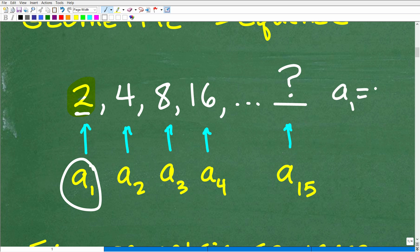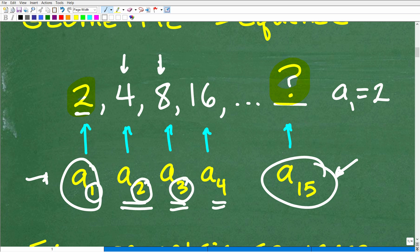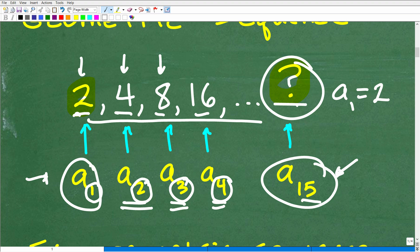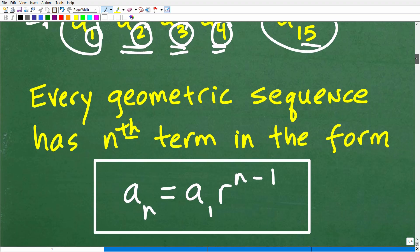The second term of this sequence would be 4, etc. We're interested in knowing a sub 15, the 15th term of this sequence. You need to be familiar with this notation because when I show you the formula, you'll need to understand it. The little subscript, these numbers like 2 or 3, represent the location, the position that value is in the sequence. If I look at a sub 4, I'm talking about the fourth number in the sequence. A sub 15 is the 15th number, the value of the 15th number in that sequence.